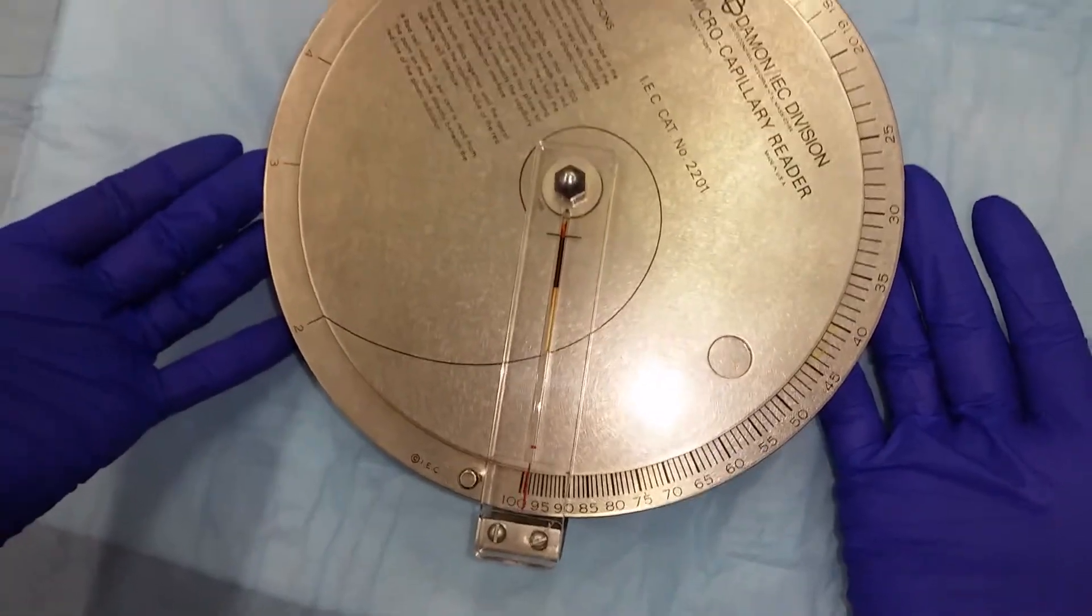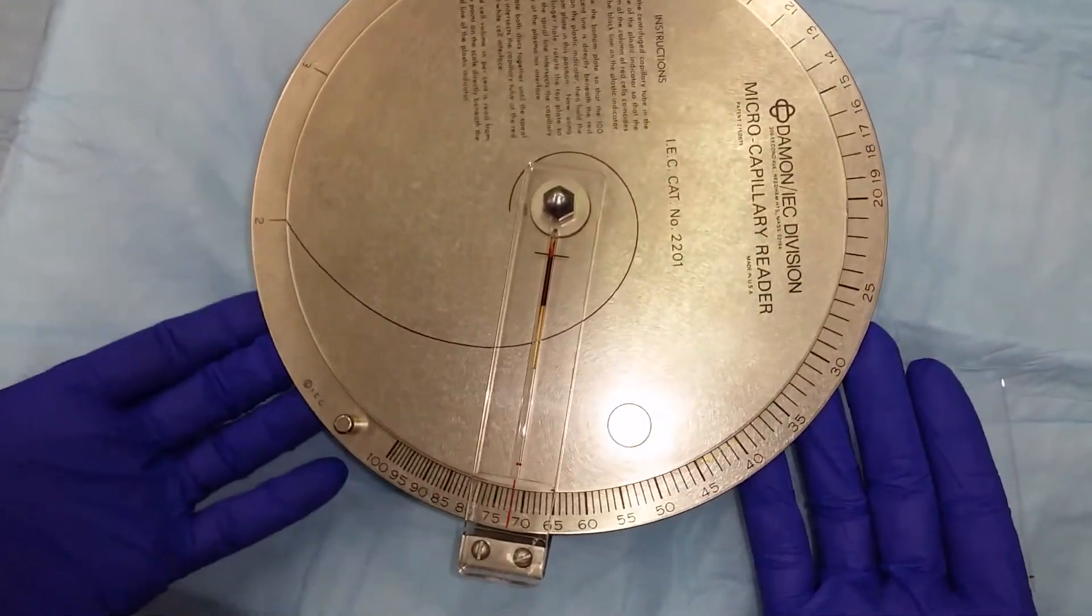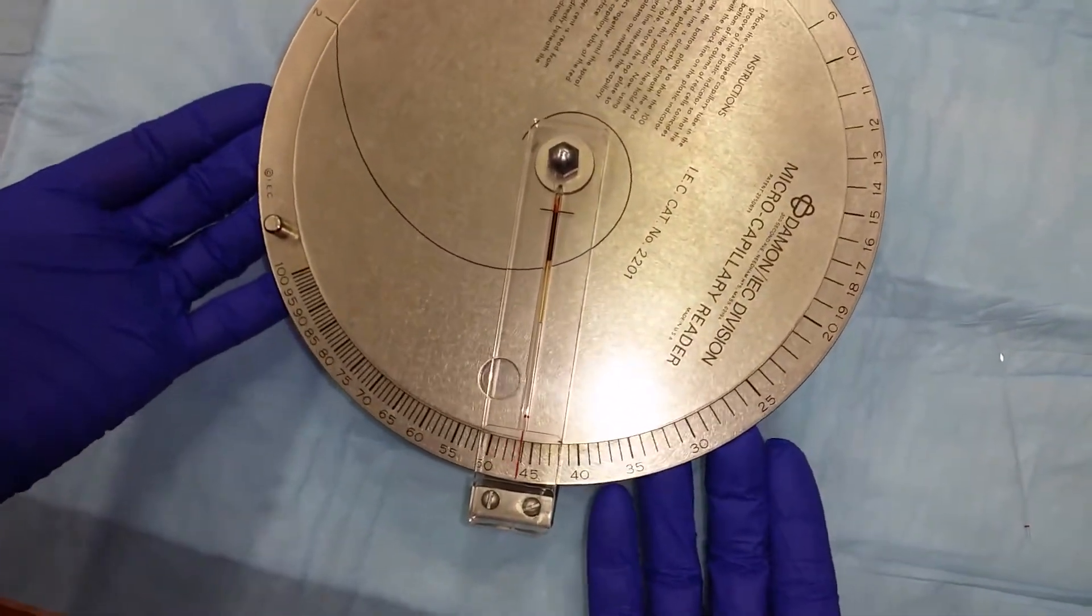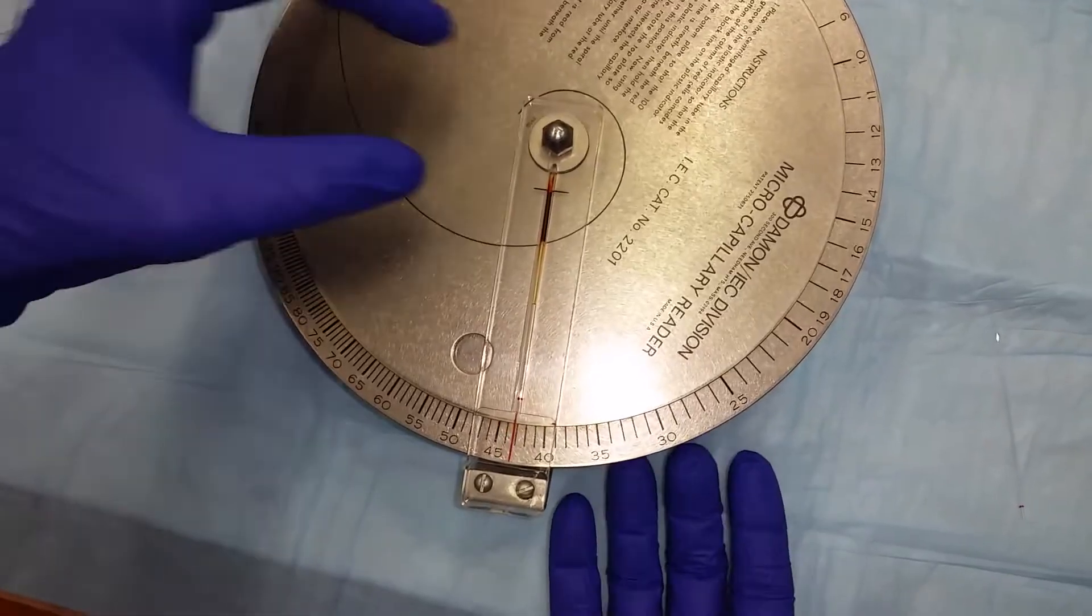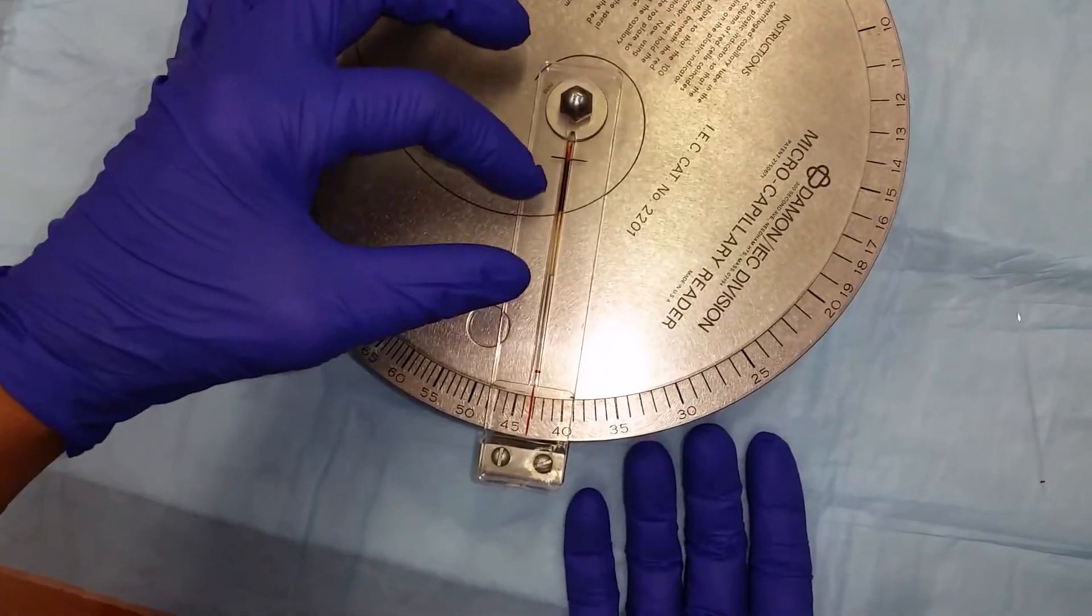Then, moving both plates together, move the spiral line until it reaches the intersection of the red blood cell column and the plasma.